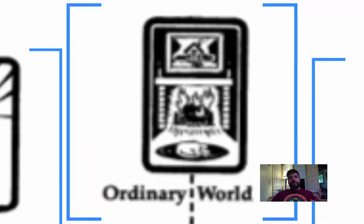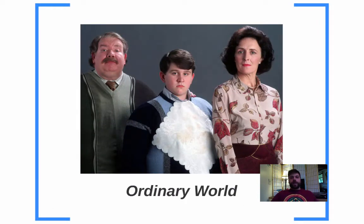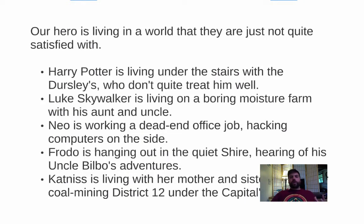The first step on the cycle — we're going counterclockwise — is that our hero starts out in the Ordinary World. Here's a picture of the Dursleys for Harry Potter; that's his ordinary world. The ordinary world is a place where the hero just doesn't feel like they fit — they're ill at ease and not treated well. Luke Skywalker lives on a boring moisture farm; Neo works a dead-end office job; Frodo is in the quiet Shire; and Katniss lives in poor District 12 under the harsh rule of the Capitol. In each case, the hero is not satisfied with their current situation, which spurs them toward adventure.